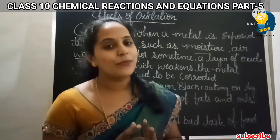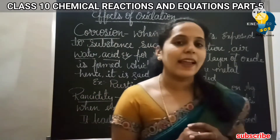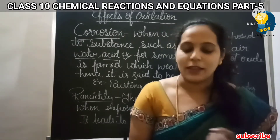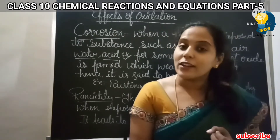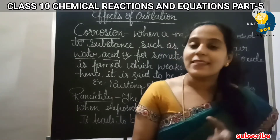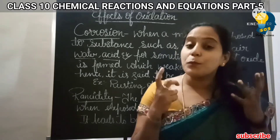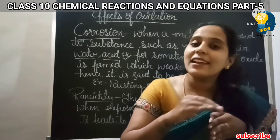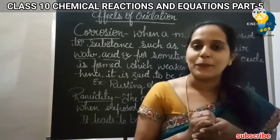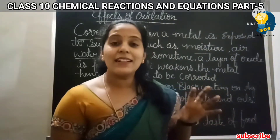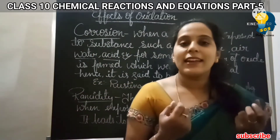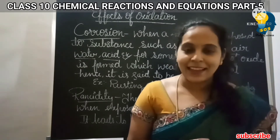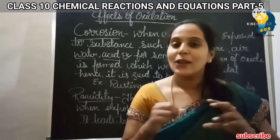Firstly, let us talk about corrosion. Corrosion occurs when metals are exposed to substances present in the atmosphere — such as air, water, moisture, or acids. When metals are exposed to these, an oxide layer forms on them. As a result, the metals become weakened. This condition is called corrosion.